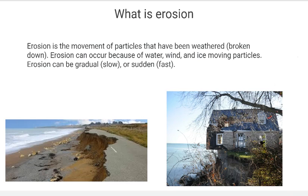Erosion is the movement of particles that have been weathered or broken down. In our last two videos discussing water erosion and wind erosion, we have seen that over time this process of weathering — the breaking down — and erosion, the movement of those particles, can go hand in hand and can sometimes occur simultaneously. Through erosion, things such as water, wind, and ice move these particles. And erosion can be gradual and slow over time, or it can be sudden and very quick.